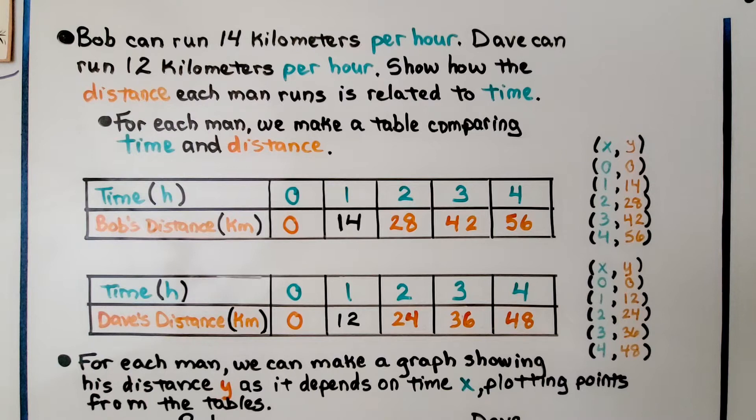Bob can run 14 kilometers per hour, and Dave can run 12 kilometers per hour. Show how the distance each man runs is related to time.